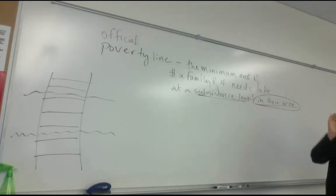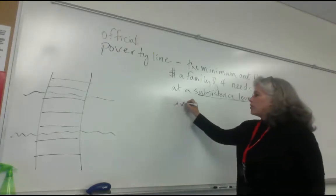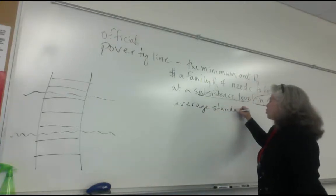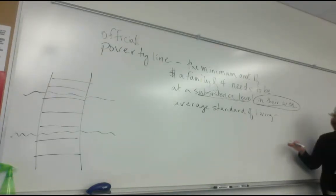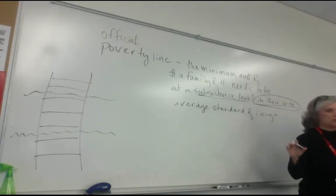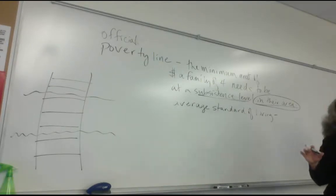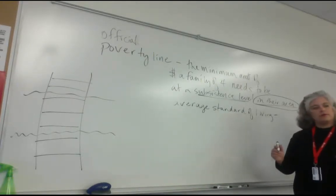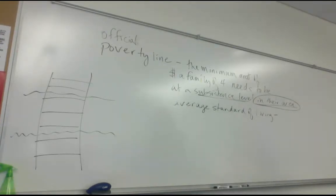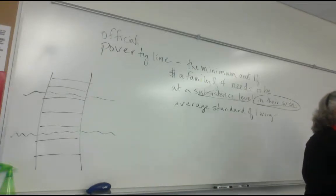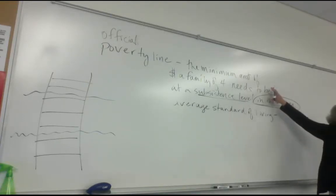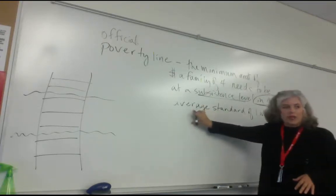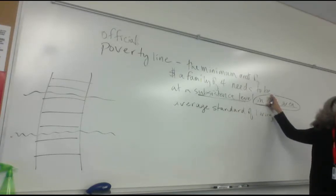There's a bit of additional meaning to the official poverty line we need to talk about, and that's where the term 'average standard of living' comes in. The average standard of living changes from one place to the next because prices change. So we can't say the average standard of living is a universal fixed amount.